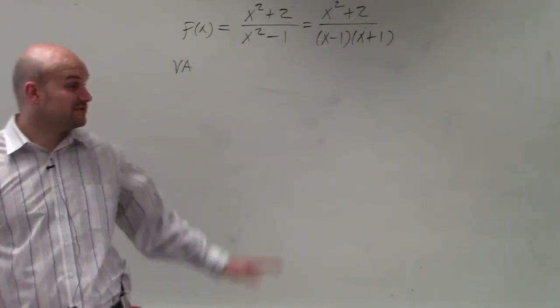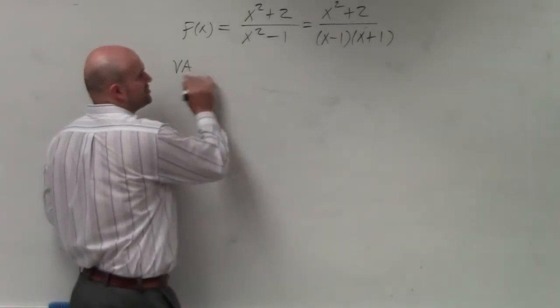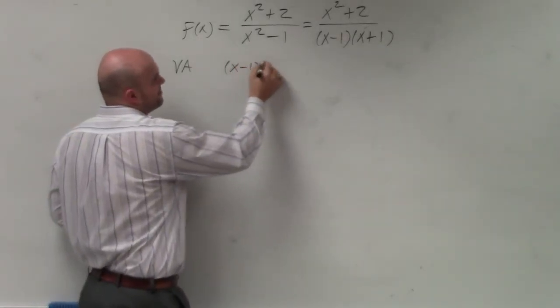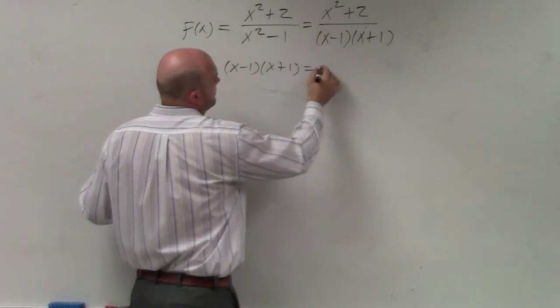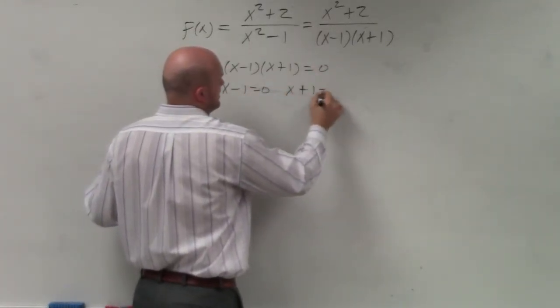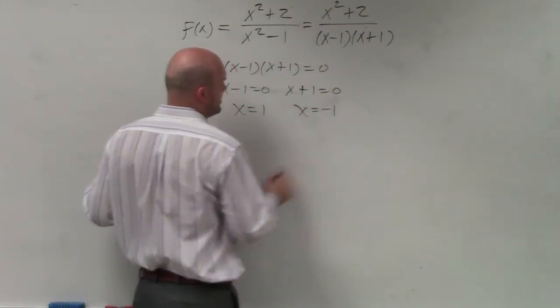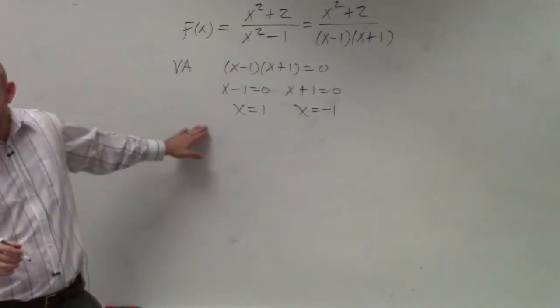I can't simplify anything, so my two discontinuities are going to be non-removable. To find my vertical asymptote, I just set them both equal to zero and then solve. So I have x minus 1 equals 0, and x plus 1 equals 0. Therefore, I have x equals 1 and x equals negative 1. So those are my two vertical asymptotes.